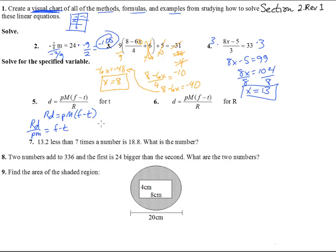And then subtract f. r d over p m minus f equals a negative t. So then we would have to times by a negative 1 to get the t by itself. We end up with t equals negative and a positive f. Negative r d over p m positive f. So we can write it like this: f minus r d over p m.